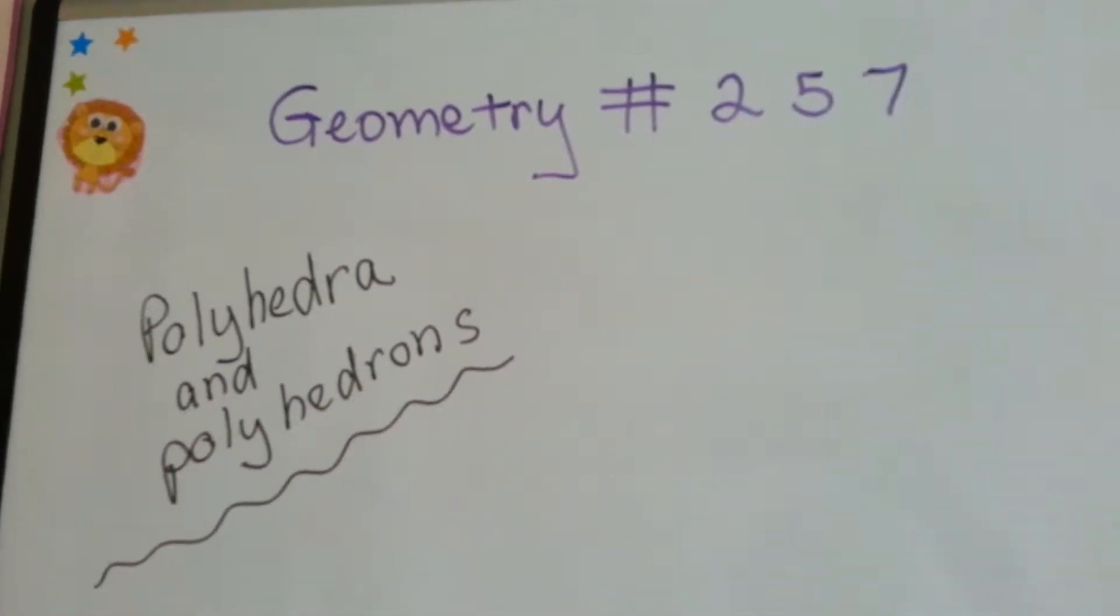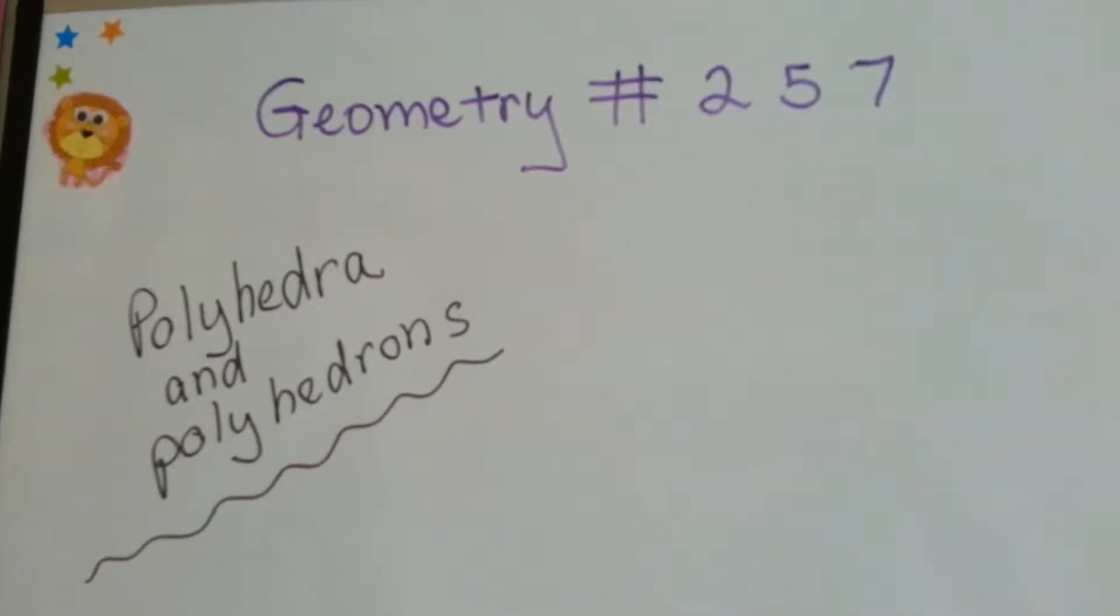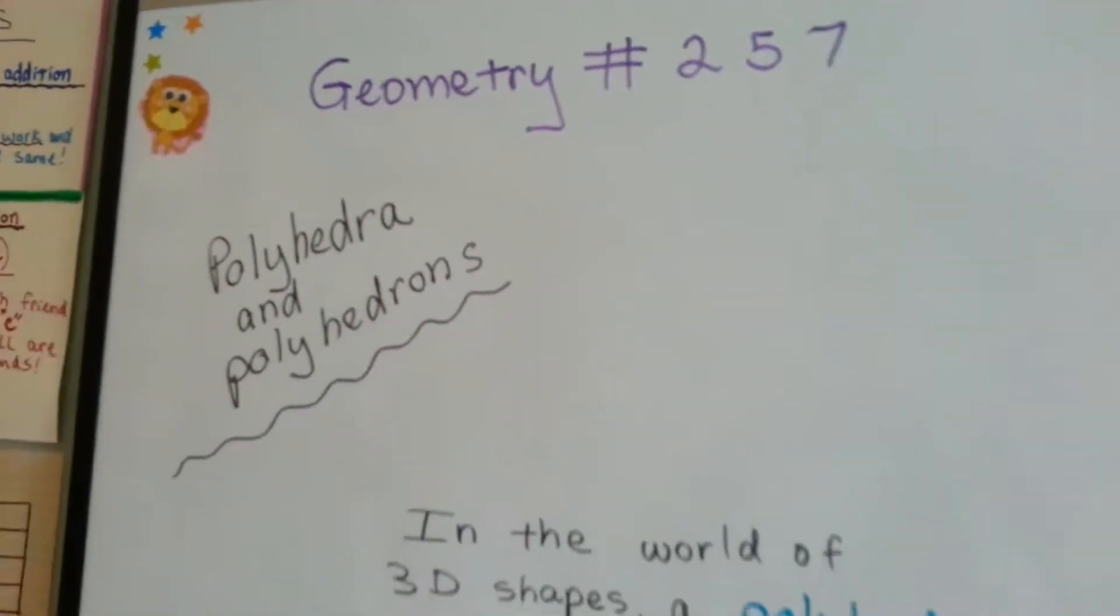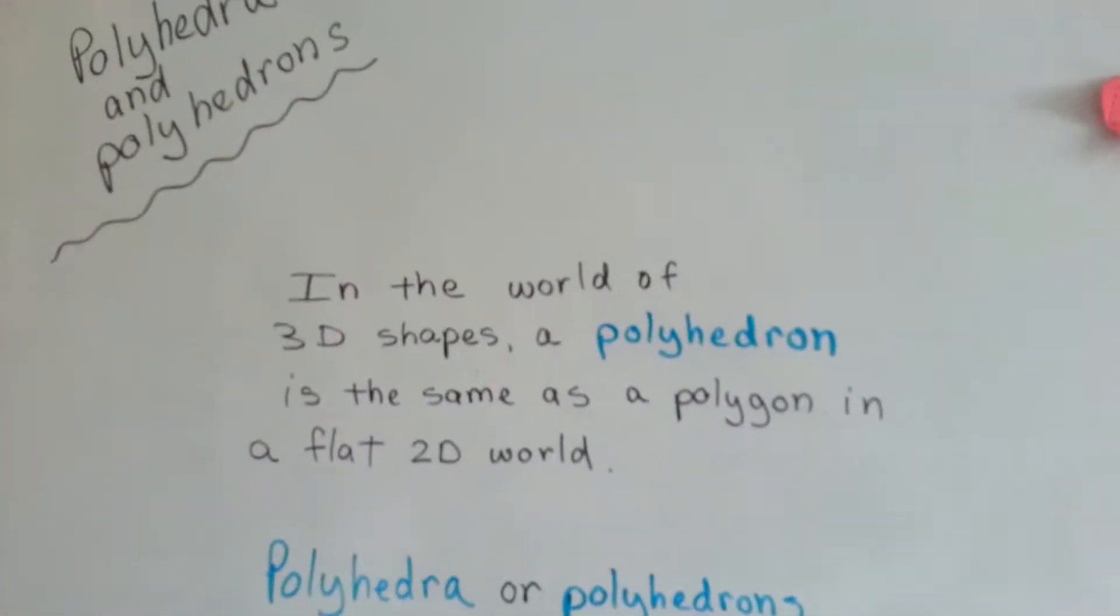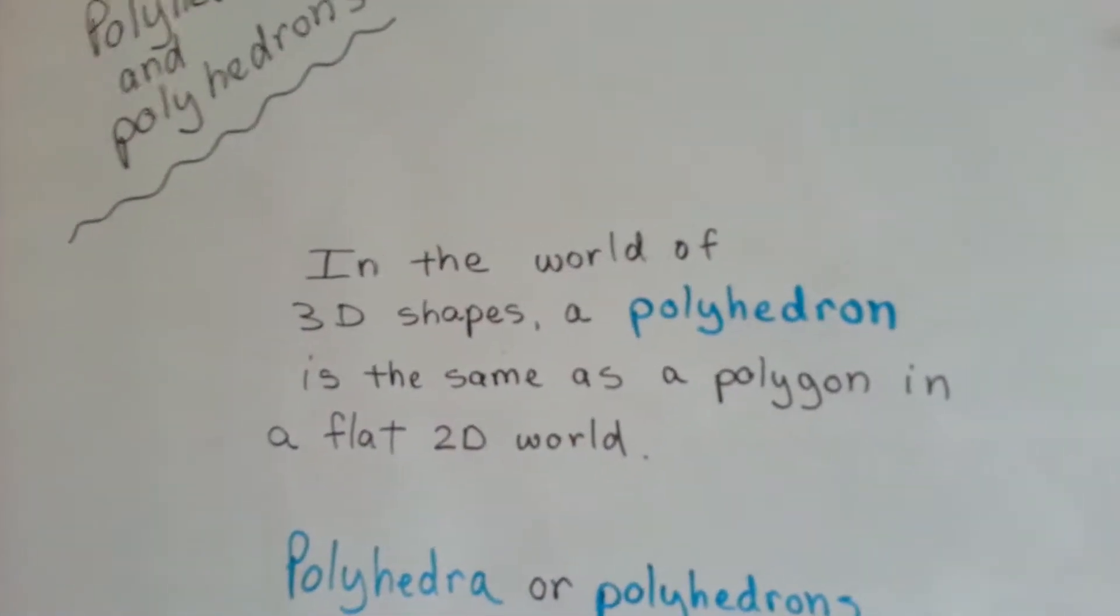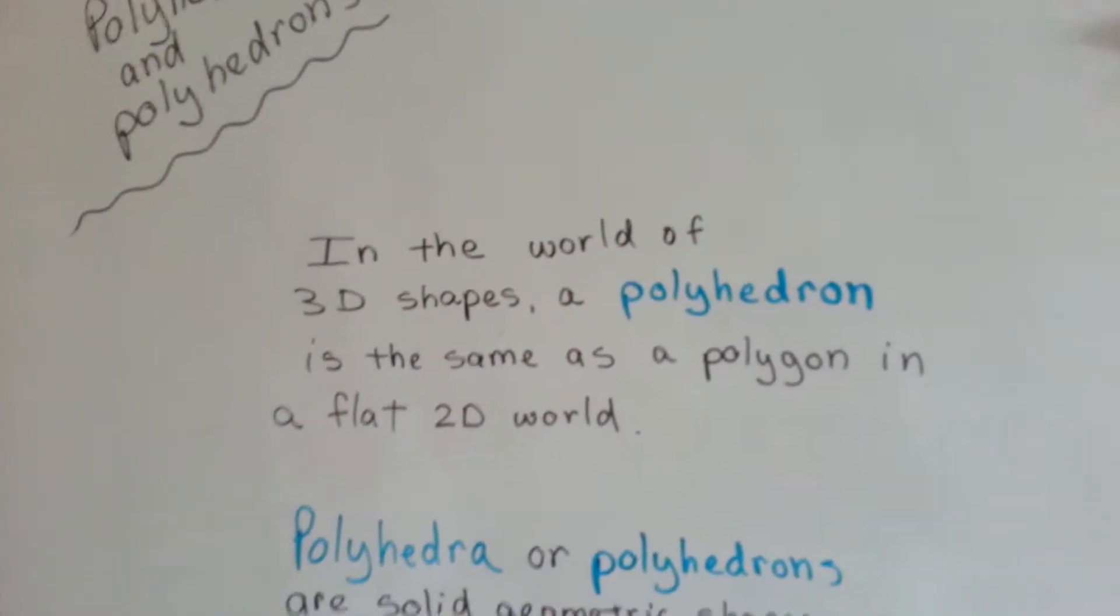Geometry number 257, Polyhedra and Polyhedrons. In the world of 3D shapes, a polyhedron is the same as a polygon in a flat 2D world.